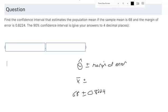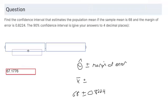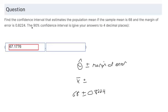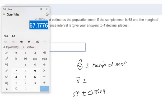That goes up here. That's the lower bound. That's as low as we think the mean is going to be. And we think the highest the mean could be is 68.8224.